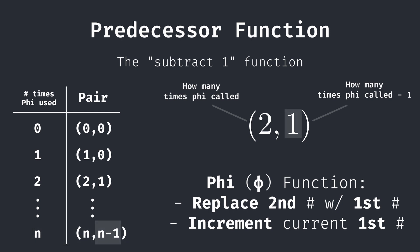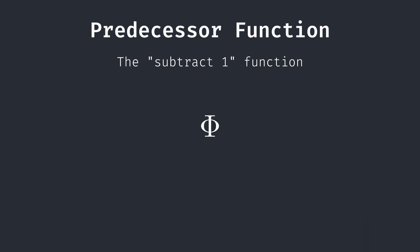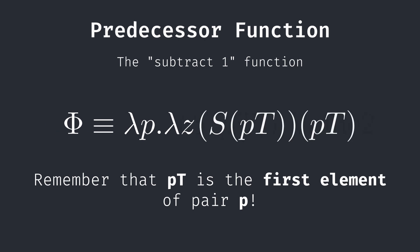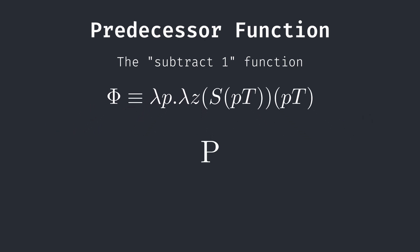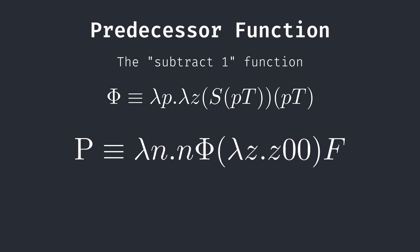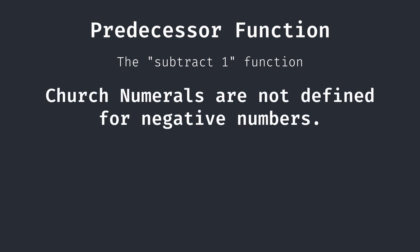Now we just need to extract the second number of the pair to get n minus 1. Using the knowledge of pairs we already have, we will define phi. We take a pair p and return a new pair. In the first element of the new pair, we call successor on the first element of the input pair. For the second element, we simply just take the first element of the input pair. In order to define the predecessor, we take n and call phi n times on the 0, 0 pair. Finally, we extract the second element by applying it all to false. Similarly to addition, we can define subtraction with the predecessor. Remember that church numerals are not defined for negative numbers. When we attempt to call predecessor 0, we will still get 0. Similarly, if we attempt to subtract the larger number from the smaller number, we will also get 0.